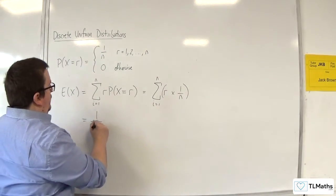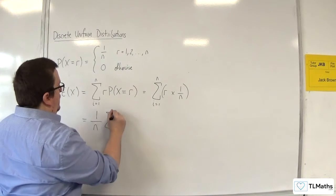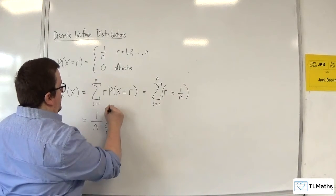So, we can write that as 1 over n times by the sum from i equals 1 to n of r.